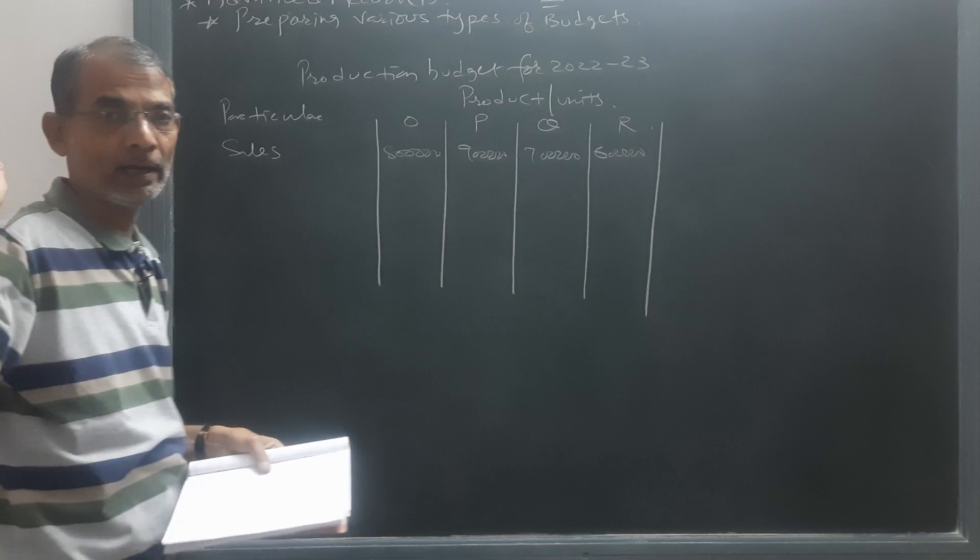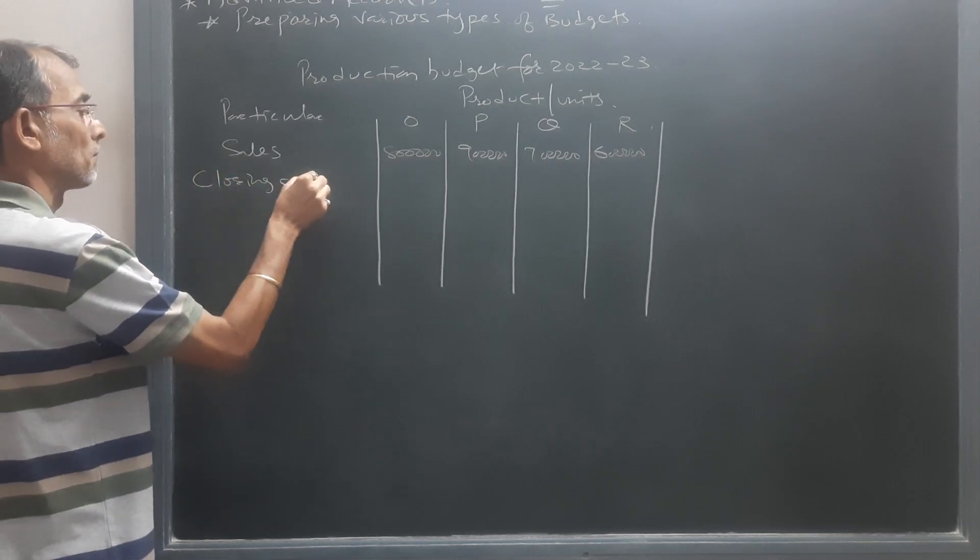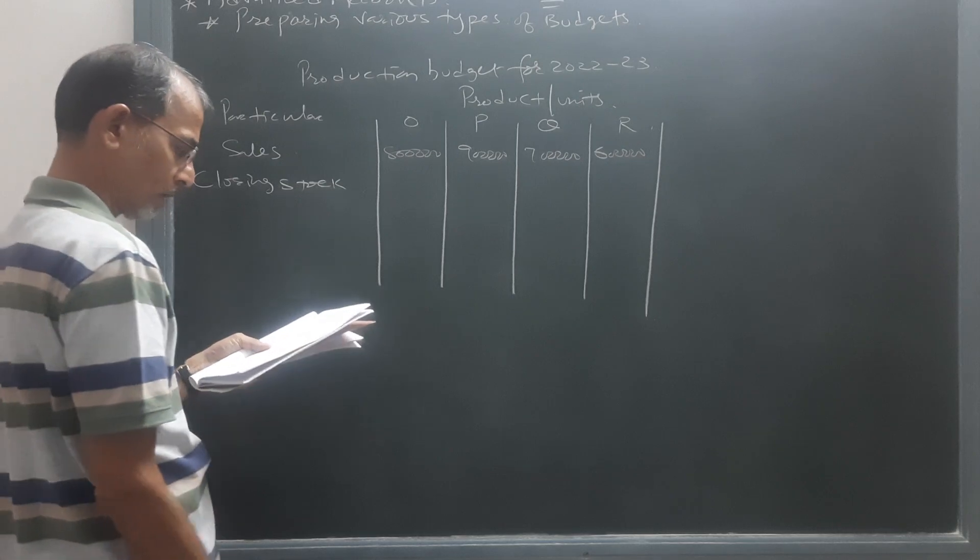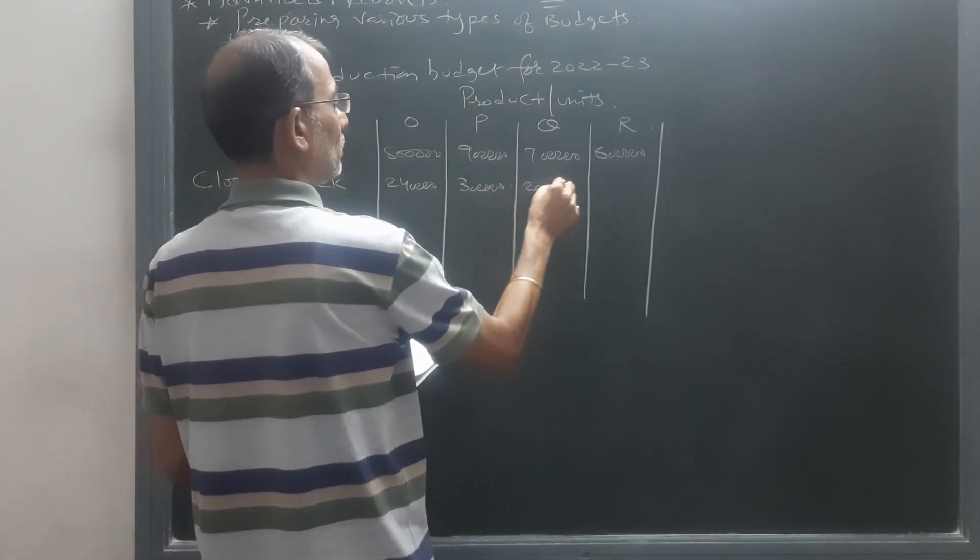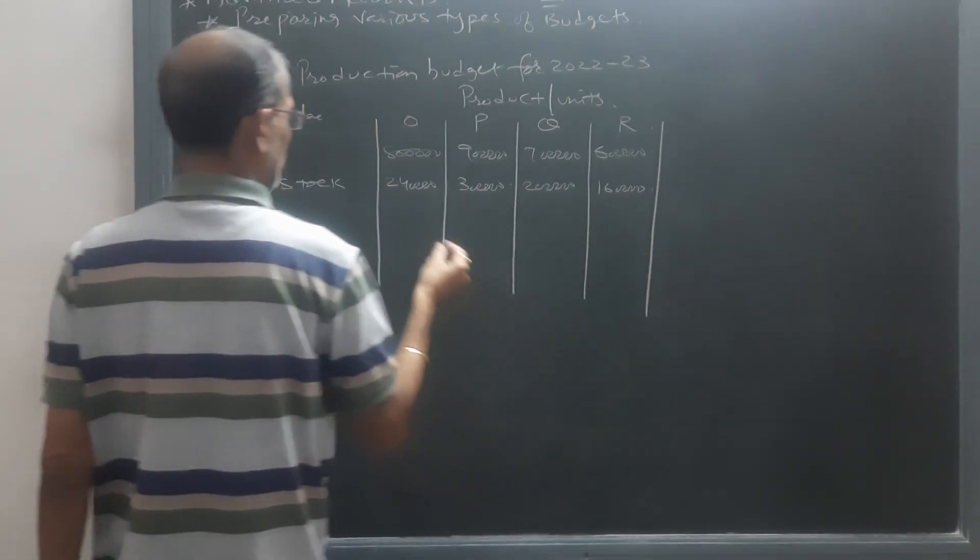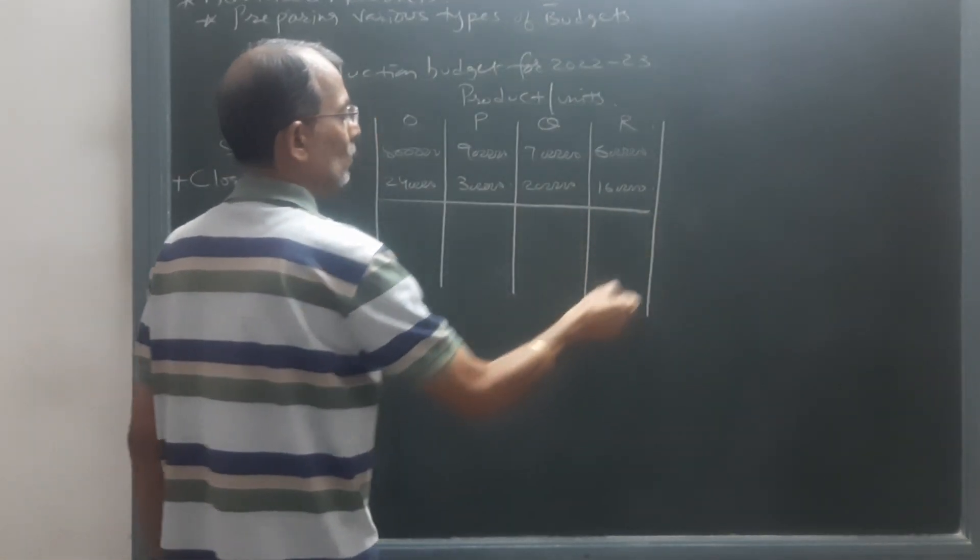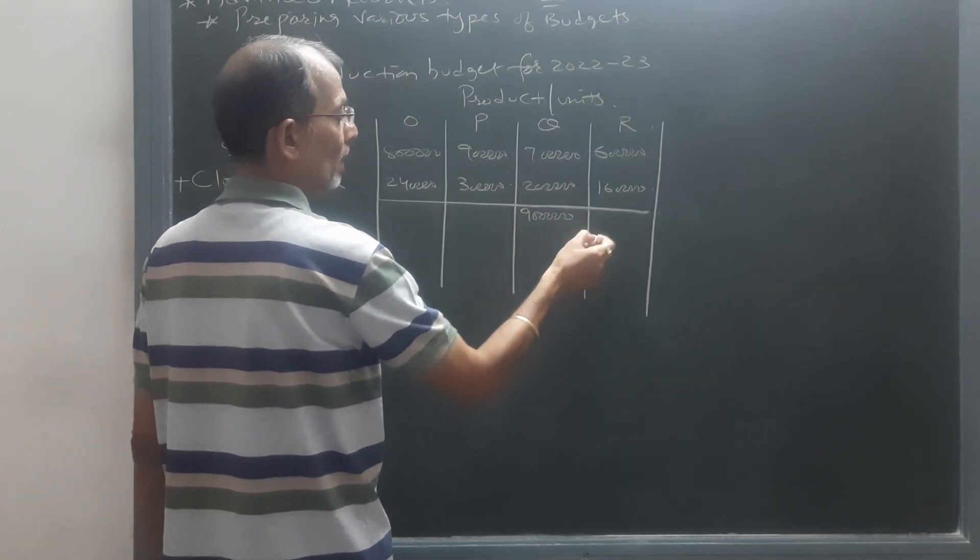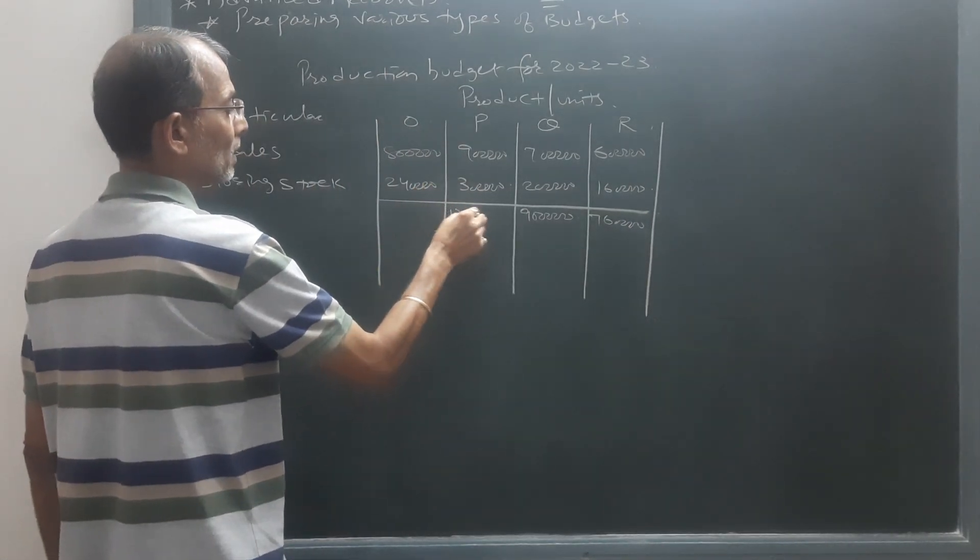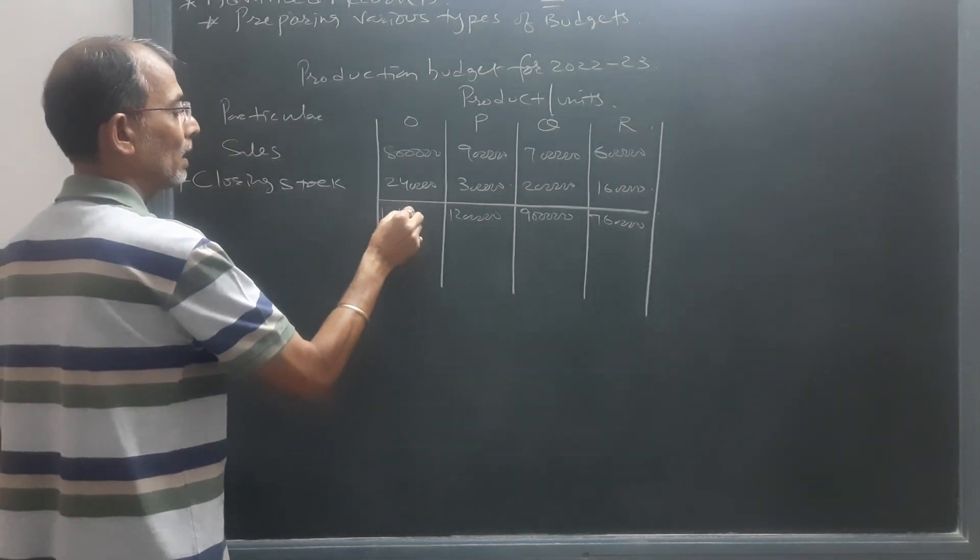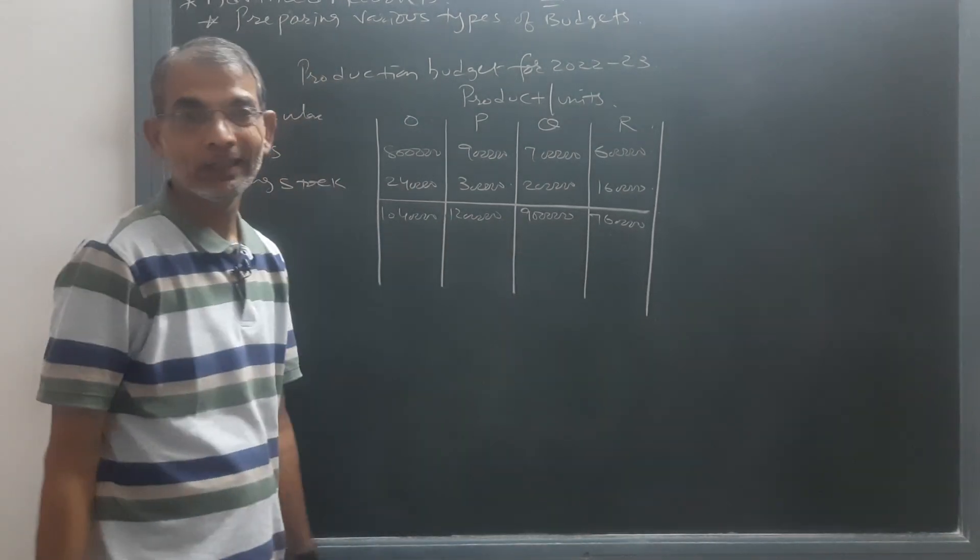Now in that we will add closing stock which company needs to maintain: 2 lakh 40 thousand, 3 lakh, 2 lakh, and 1 lakh 60 thousand. This will be added to the sales. So here it will be 10 lakh 40 thousand, here this will be 9 lakh, 12 lakh, and 7 lakh 60 thousand.